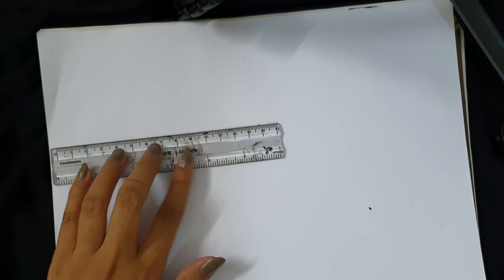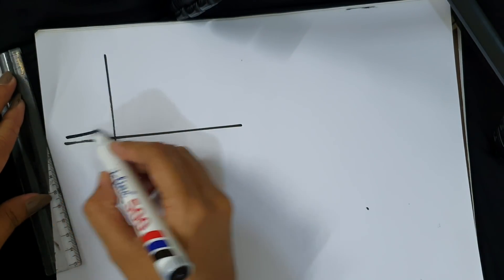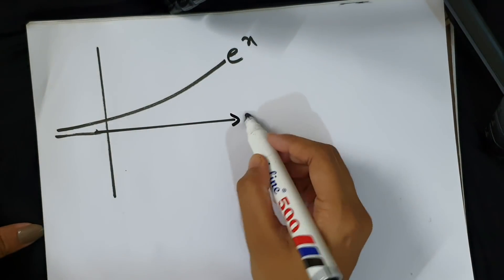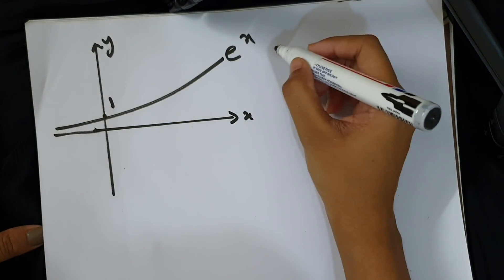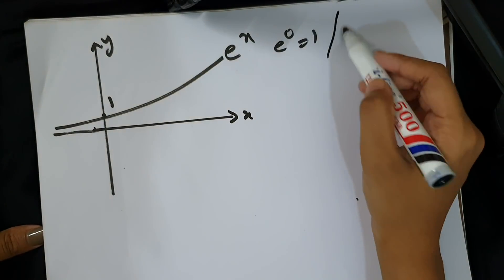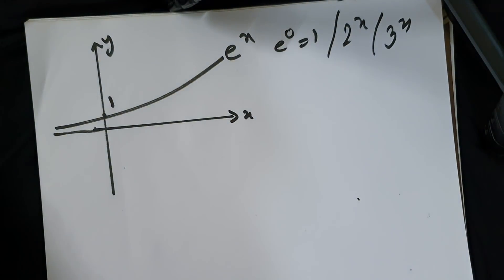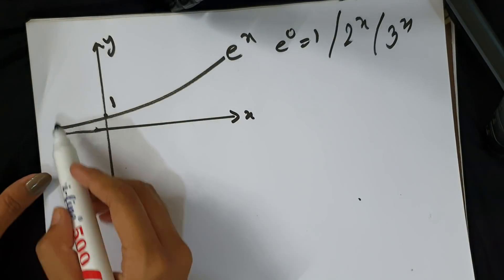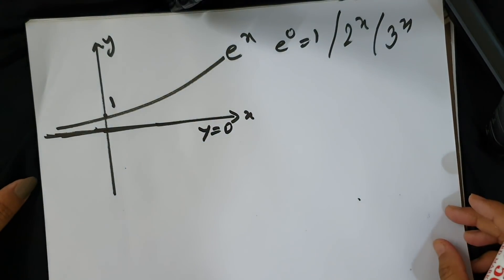Now the exponential graph: e to the power x. The basic exponential graph has x-axis and y-axis. For e^x, when x equals 0, y equals 1. The shapes of e^x, 2^x, and 3^x are similar. The x-axis itself is the asymptote — equation y equals 0.